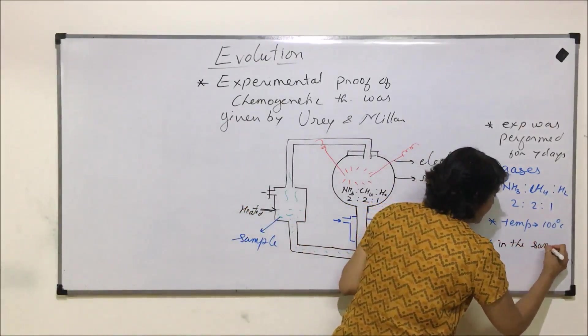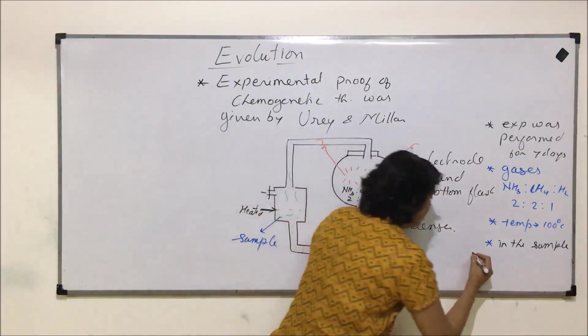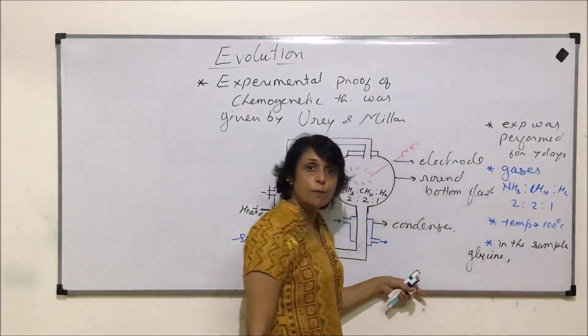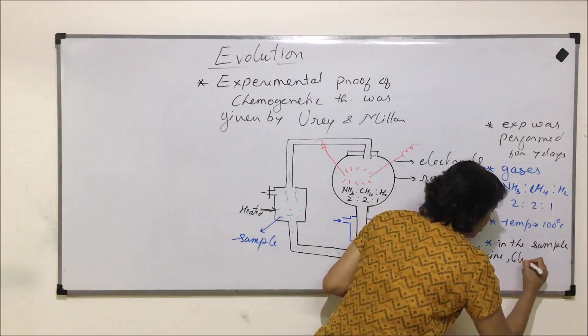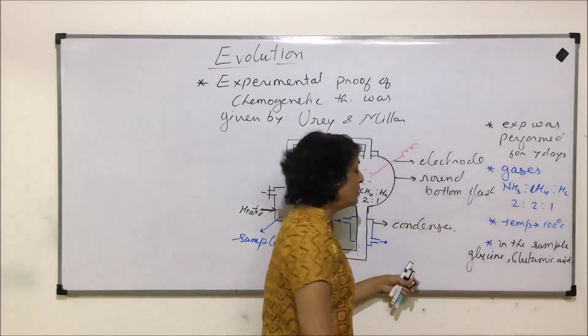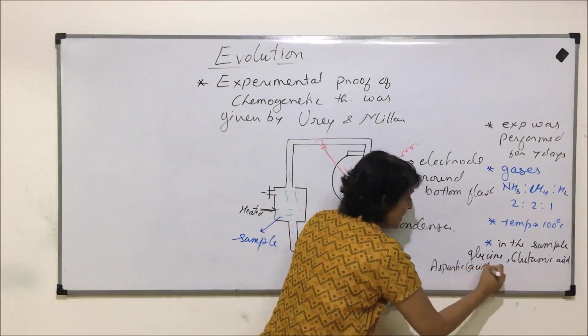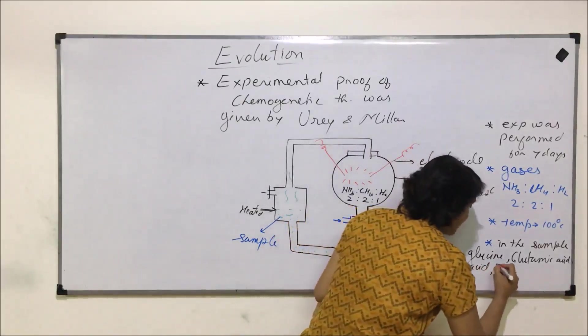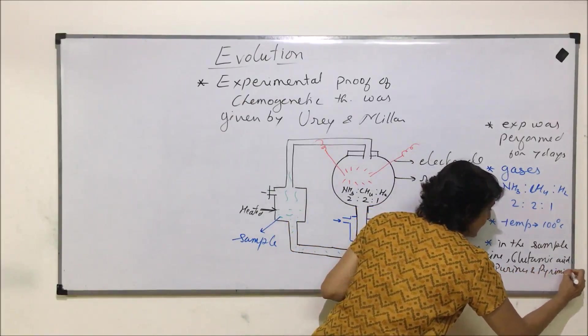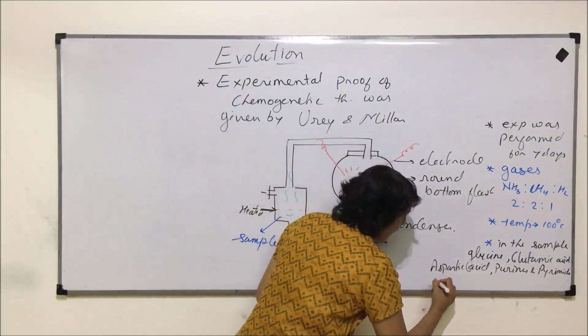In the sample, the molecules or compounds which were obtained were glycine, which is an amino acid, glutamic acid, which is another amino acid, aspartic acid, purines and pyrimidines, which are nitrogen bases, and some other aldehydes.